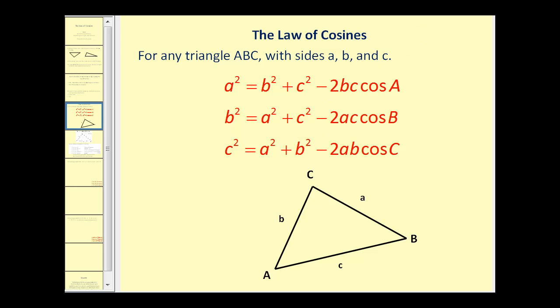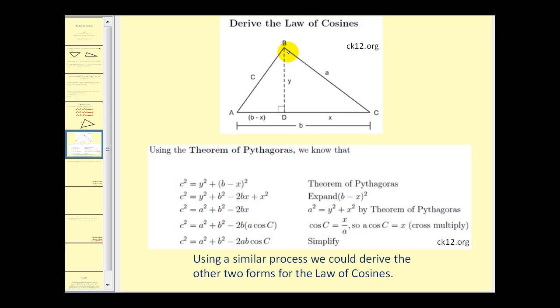Let's take a look at one way to prove this theorem. If we take any triangle and construct an altitude from vertex B, we would have two right triangles. Next, if this entire length is B, we can let this length be X. Therefore, this length would be B minus X.